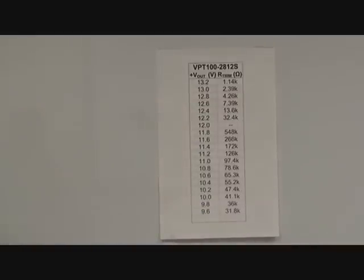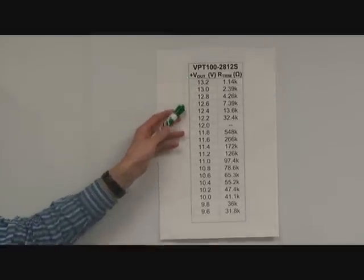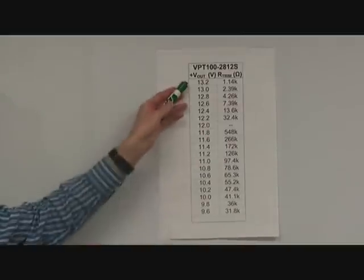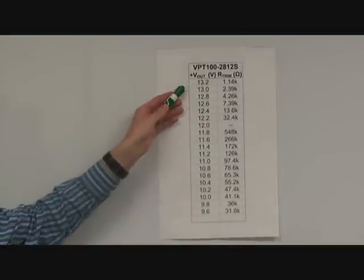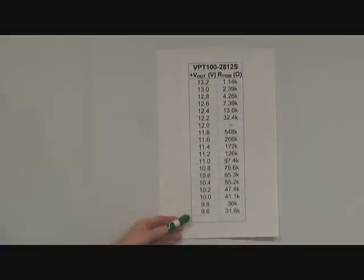In order to determine the value of R trim that needs to be connected to trim the output voltage up or down, locate the trim table in the data sheet for the product you are using. In this case, I'm using an example of the VPT100-2812S converter. In the left column of the trim table, you will see the V out adjustment range from plus 10% to minus 20% of nominal. Check the data sheet for the product you are using for the exact trim range available.